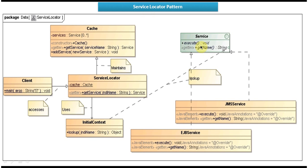On the right side you can see Service Interface. It has two methods: Execute and GetName. This Service Interface is implemented by two service classes. The first one is JMSService and the next one is EJVService. Both JMSService and EJVService implement this Service Interface and provide implementation of the Execute and GetName methods.